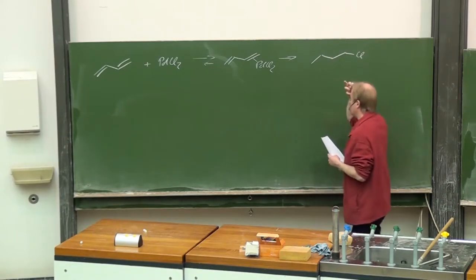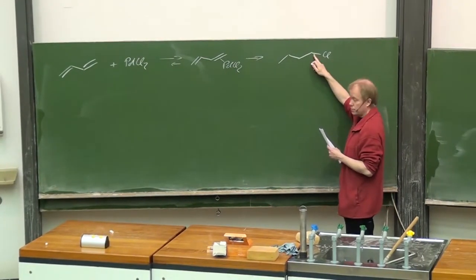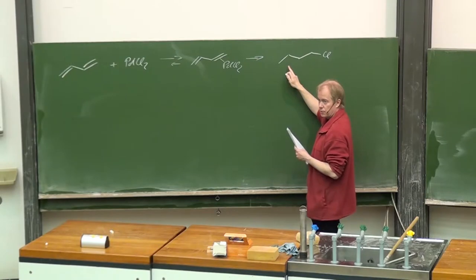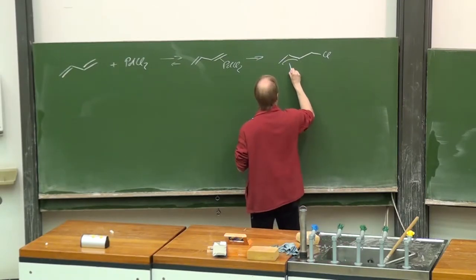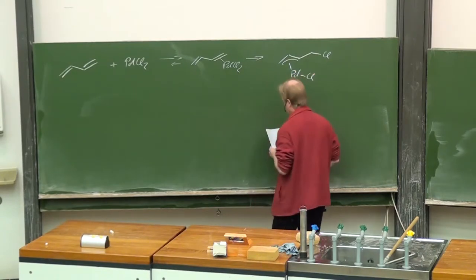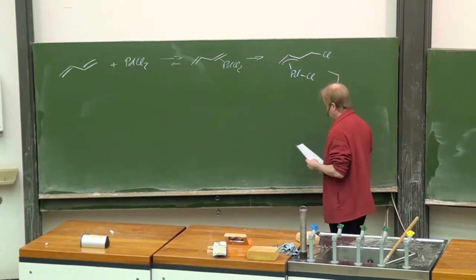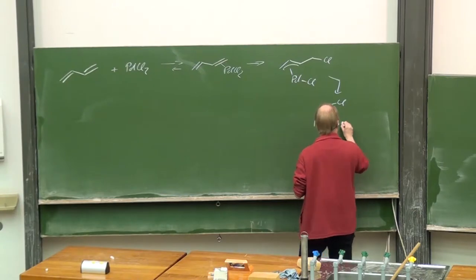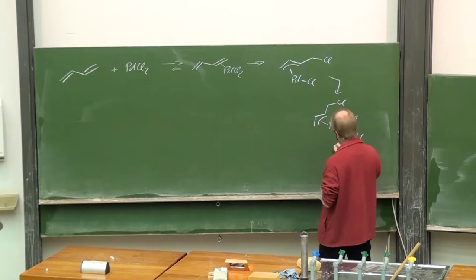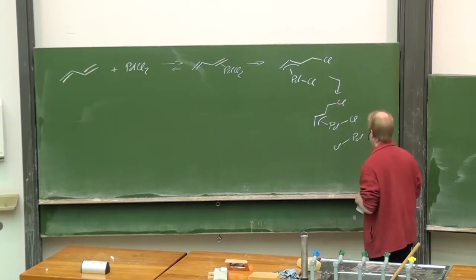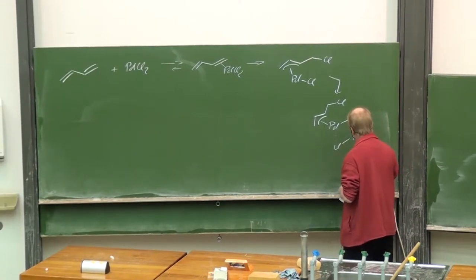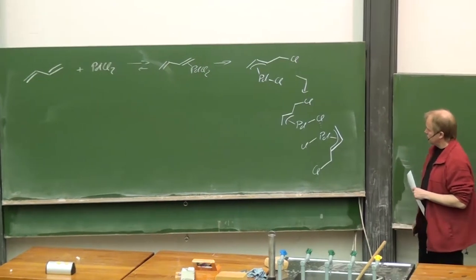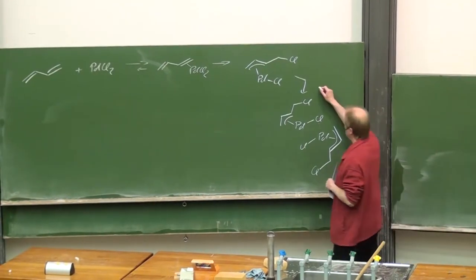Butadiene as the simplest example indeed reacts with palladium chloride and if we perform the reaction stoichiometrically, in equilibrium there will be a coordination of the palladium chloride at the butadiene similar to what we know already from the reaction with a simple olefin and an addition reaction or an insertion reaction takes place.